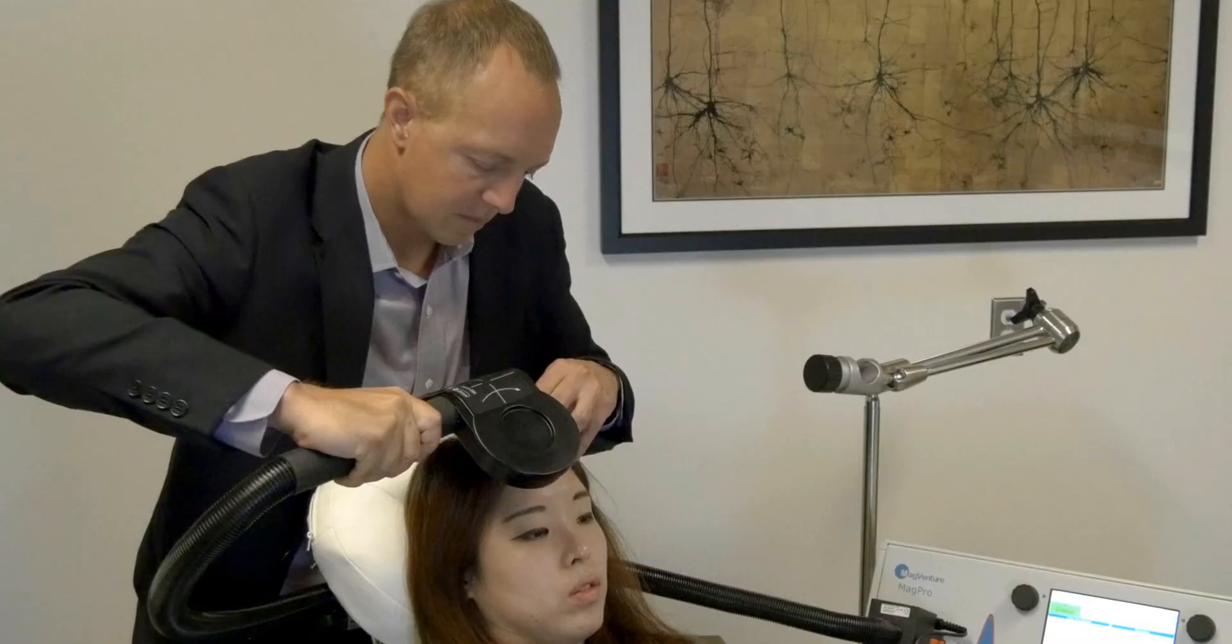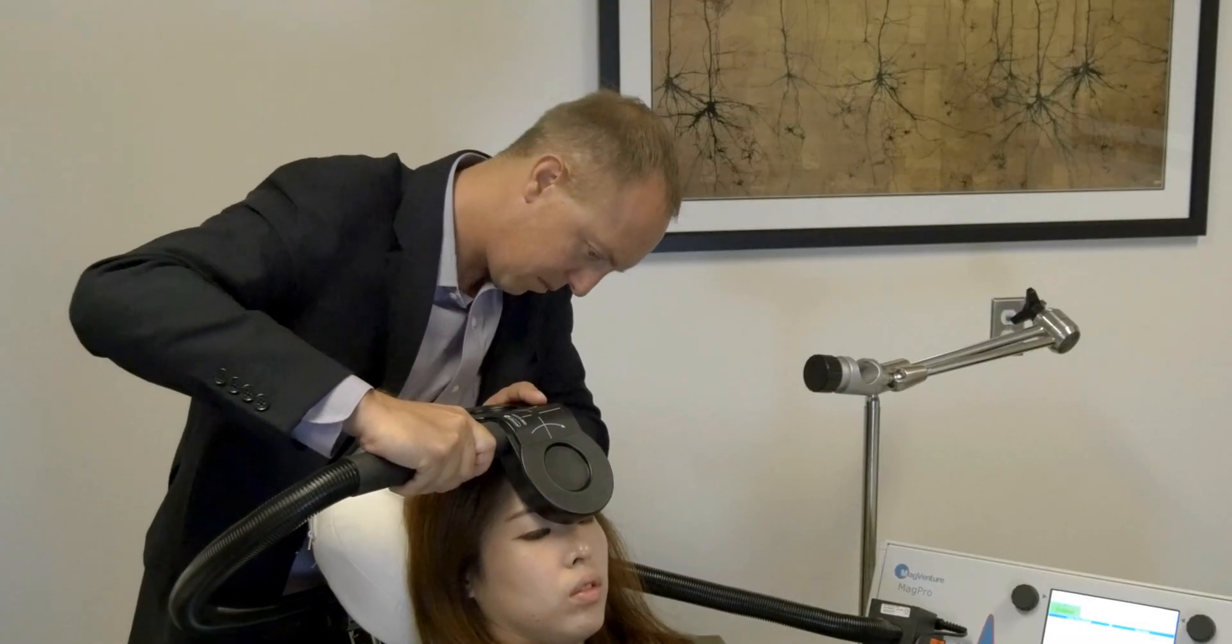There are some important differences between ECT and RTMS. Whereas ECT is delivered under anesthesia and requires the induction of a seizure for its therapeutic effect and is sometimes worrisome for generating cognitive side effects such as episodic memory impairment, RTMS does not seem to do any of those things. RTMS is delivered awake in a chair by a treatment technician without any anesthesia and there is no induction of a seizure necessary for the treatment to take effect. It also does not seem to have any cognitive impairment as an adverse effect of treatment.